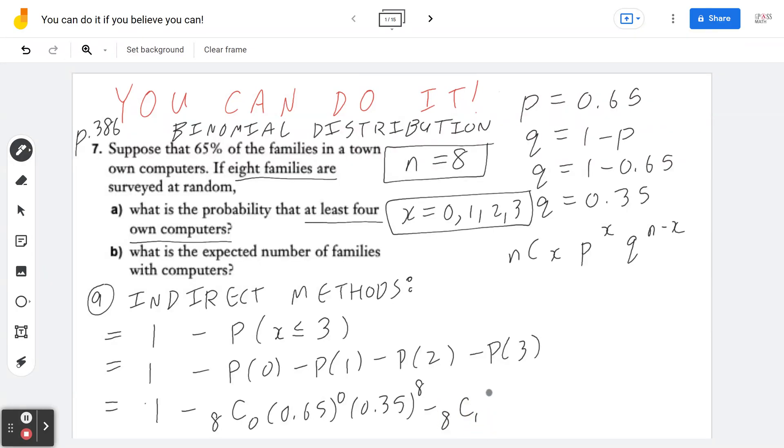p of 1 is going to be 8 choose 1 times 0.65 to the power of 1 times 0.35 to the power of 8 minus 1, which is 7, minus. So as you can see, I'm running out of space here. Let's see if I can write it here for you. Minus 8 choose 2 times 0.65 to the power of 2 times 0.35 to the power of 8 minus 2, which is 6.